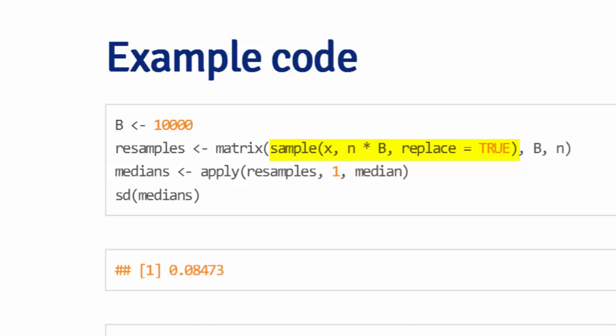This now gives me a vector of n times b samples from x. And now I'm going to simply arrange them into a matrix with b rows and n columns. So every row now is a Bootstrap resample, and it has n observations.